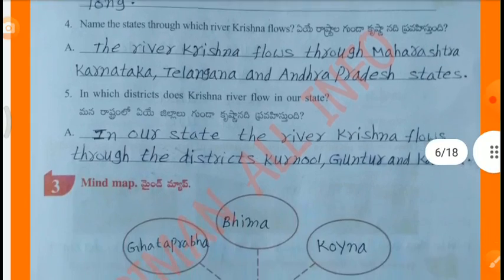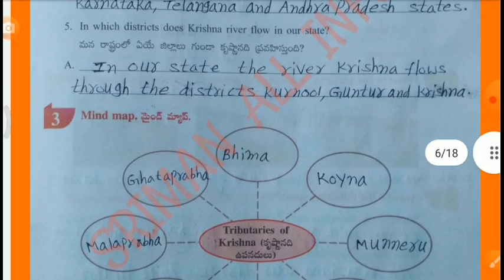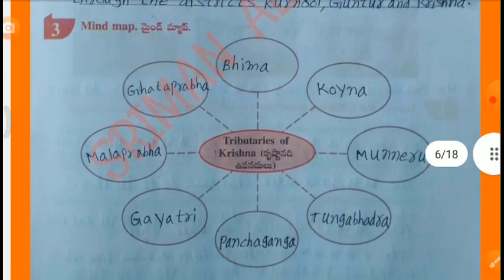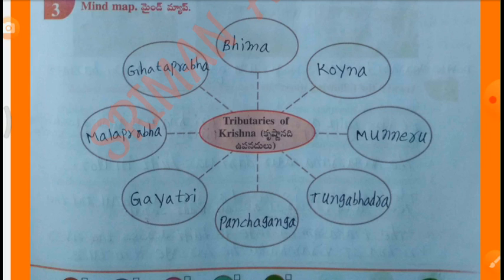In which districts does the Krishna river flow in our state? In our state, the river Krishna flows through the districts Kurnool, Guntur and Krishna. Mind Map – Tributaries of Krishna: Bhima, Koyana, Munneru, Tungabhadra, Panchaganga, Gayatri, Malaprabha, Ghataprabha.